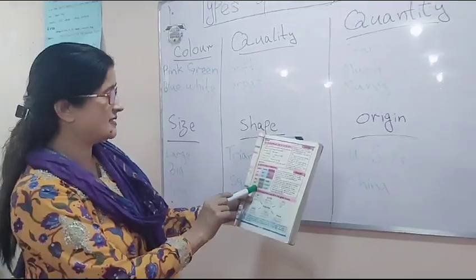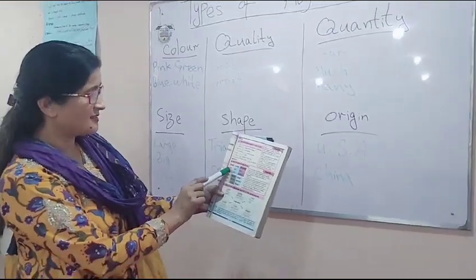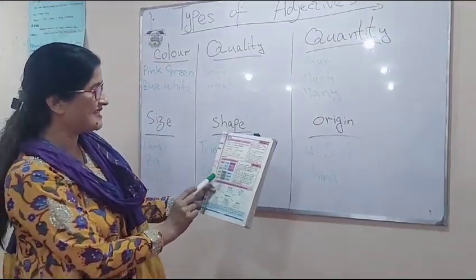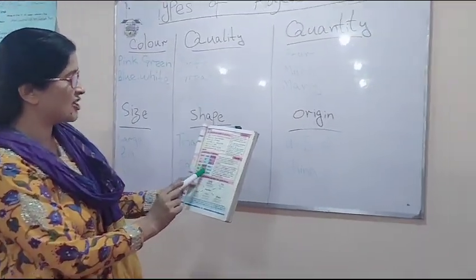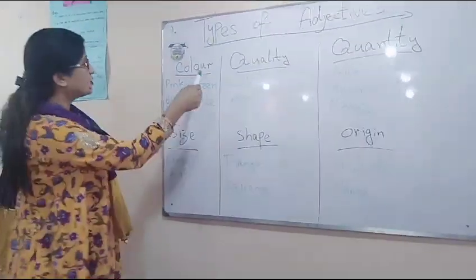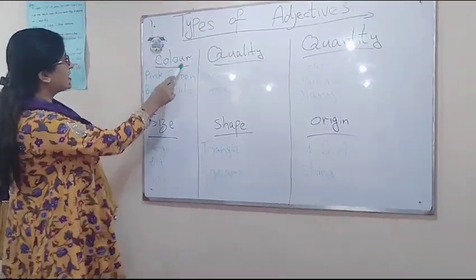So I'll try to make this with the help of these students. The categories are: colors, quality, quantity, size, shape, and origin. So these students will try to fill this up.